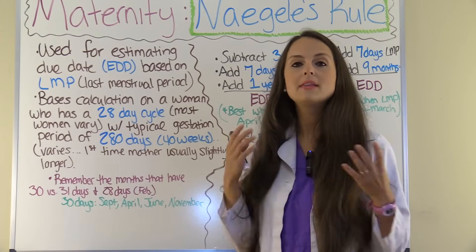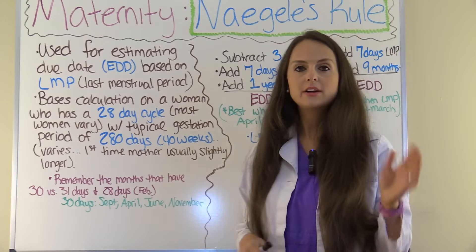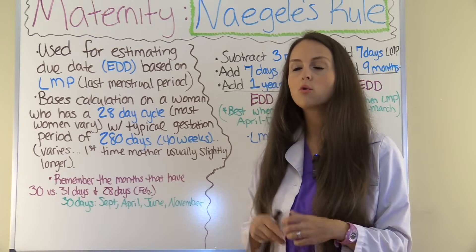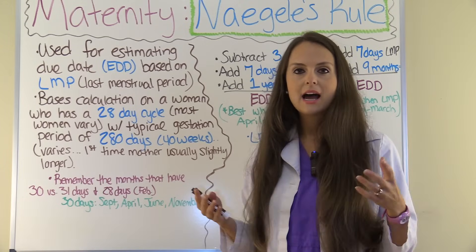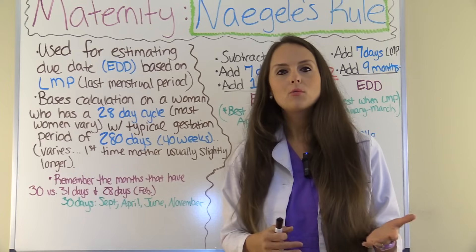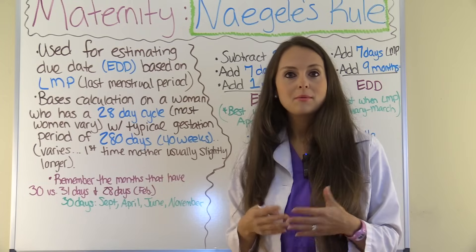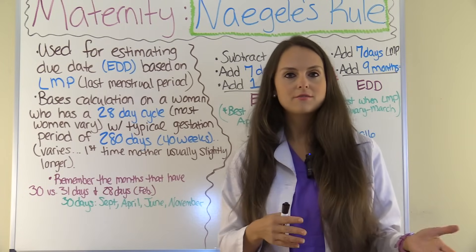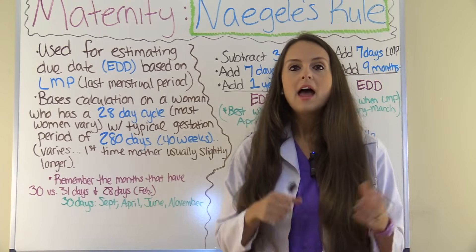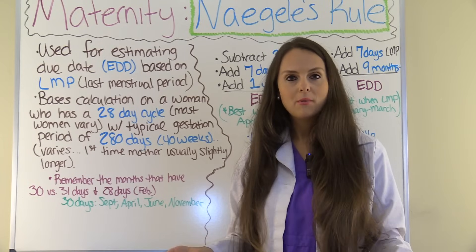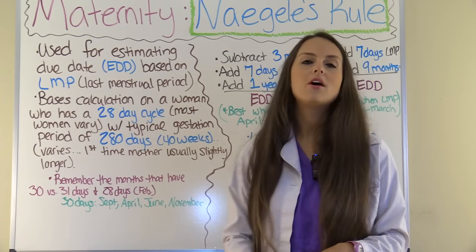One thing to keep in mind while calculating Nagel's Rule is that you need to remember which months have 30 days versus 31 days. February is always given 28 days, regardless of leap year, just to keep things simple. To help you remember, use this mnemonic: 30 days have September, April, June, and November. All the rest have 31, except February alone. So those months with 30 days are September, April, June, and November.